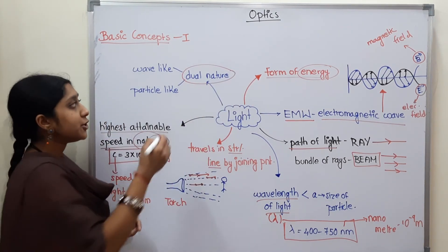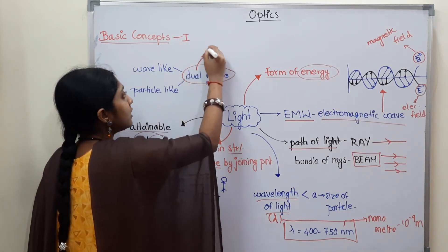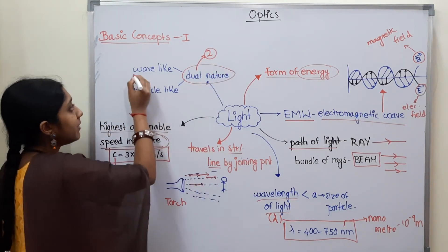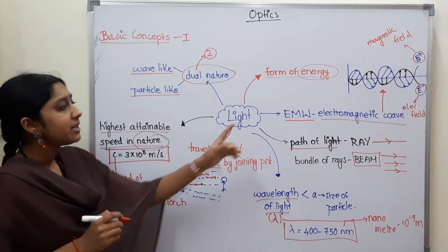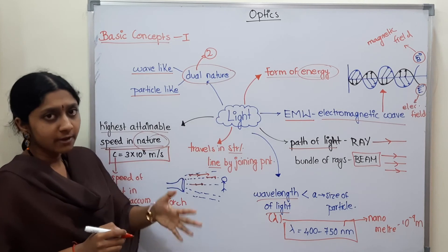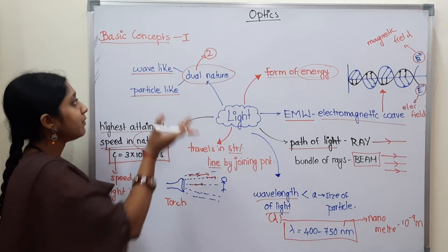Next, final point - light is dual nature. Light is dual nature. Dual means nothing but two. So light has two natures. What is this? Wave-like nature and particle-like nature. So this is light.